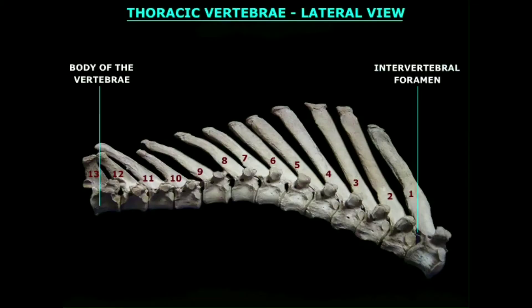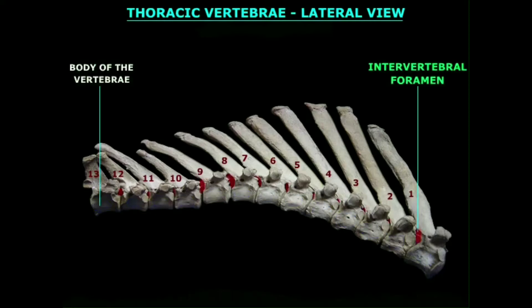Thoracic vertebrae lateral view. This is a lateral view of thoracic vertebrae 1 to 13. The body of the thoracic vertebrae are colored blue, and around the body the other processes are constructed. Between the adjacent vertebrae, the red colored irregular spaces indicate the intervertebral foramen, through which the thoracic spinal nerves pass out.